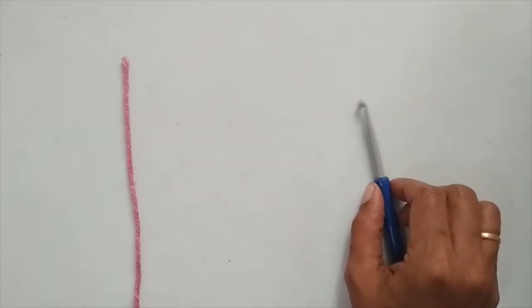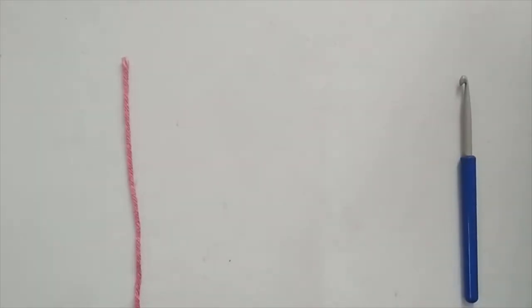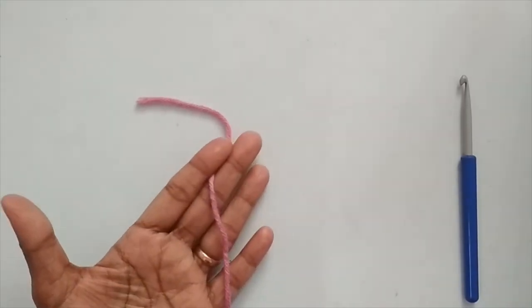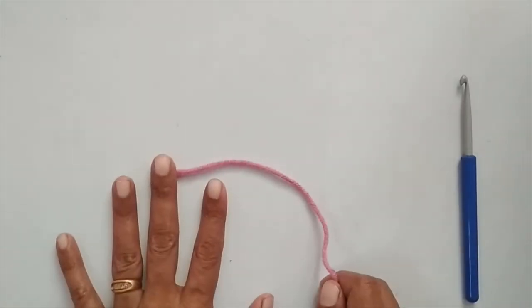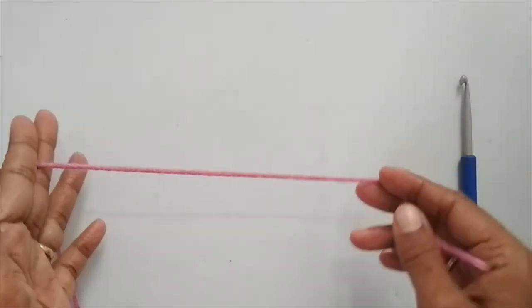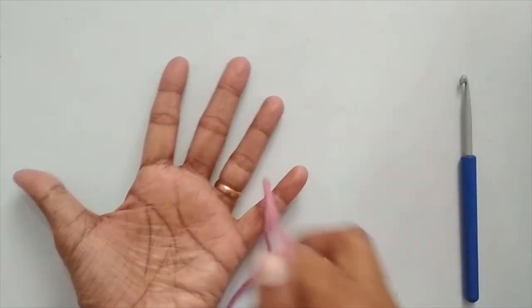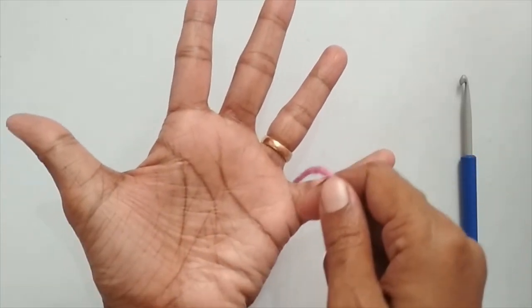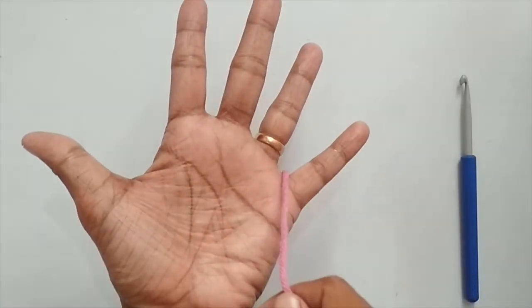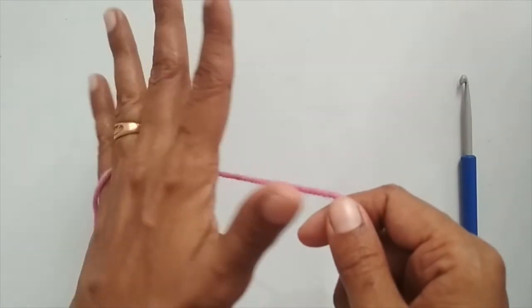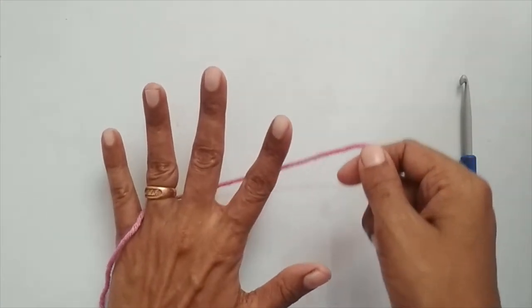So that was with respect to your hook. Now we'll see how to hold the yarn. I'll show you how I hold my yarn. For that, this is my pinky finger, this is my pointing finger. I'll take my yarn through my pinky finger and then turn my hands like this.